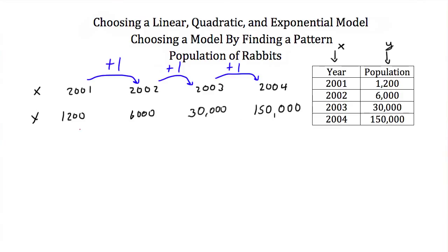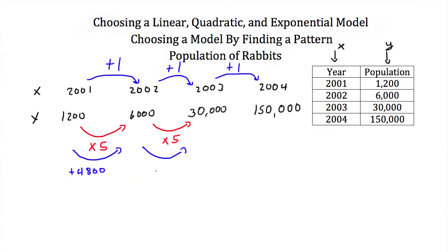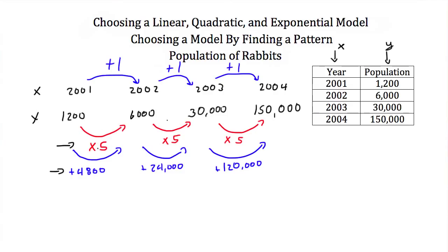To go from 1,200 to 6,000 we're either multiplying by 5 or adding 4,800. From 6,000 to 30,000 we're either multiplying by 5 or adding 24,000. From 30,000 to 150,000 we're either multiplying by 5 or adding 120,000. The first order differences are not the same, so this is not linear. But the multiplication factor is the same each time, which makes this an exponential function.